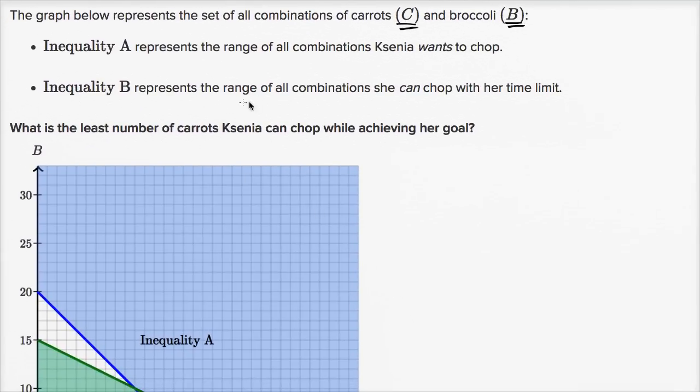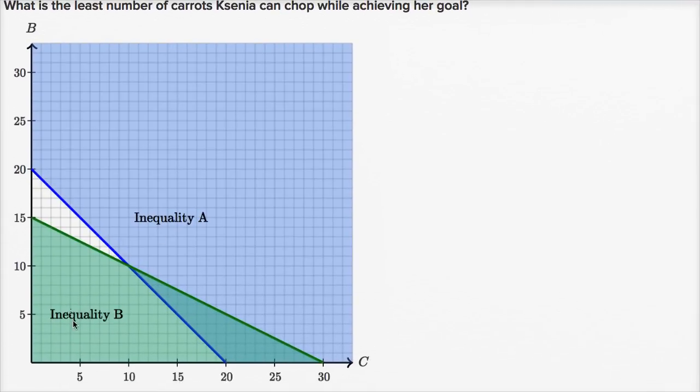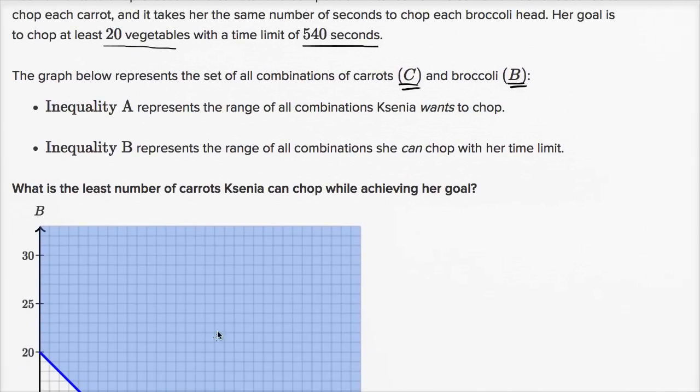And then it says Inequality B represents the range of all combinations she can chop with her time limit. So Inequality B, this is all of the combinations where she is within her time limit, where she's not spending any more than 540 seconds.